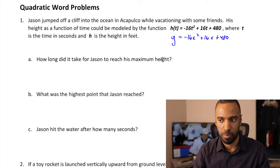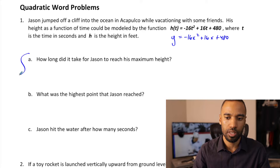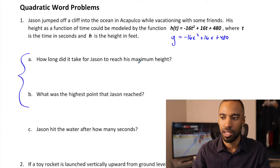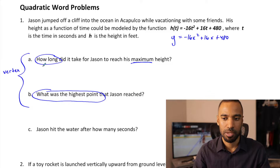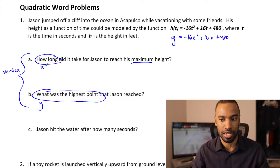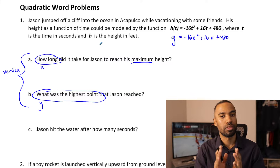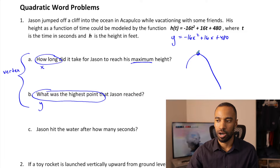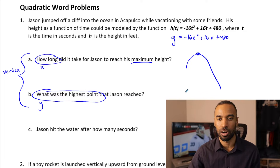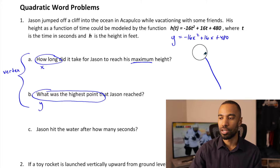How long did it take for Jason to reach his maximum height? And what was the highest point that Jason reached? These questions go in tandem — they're asking about the vertex. The first is asking about the t portion of the vertex (the x value), and the second is asking about the h(t) portion (the y value). We want to find the vertex values.